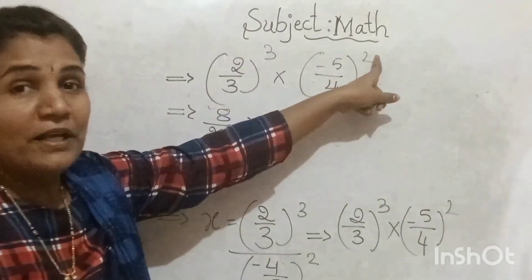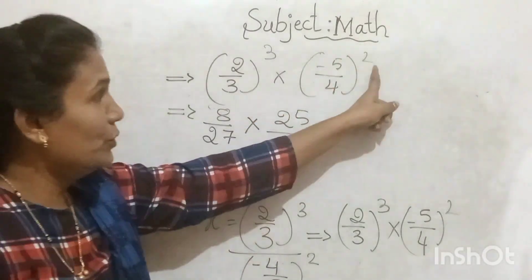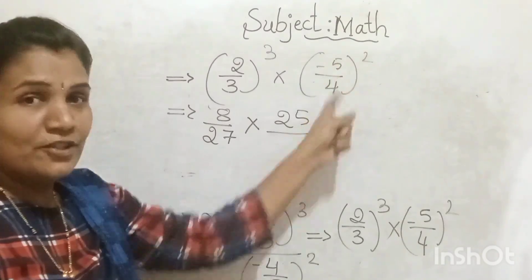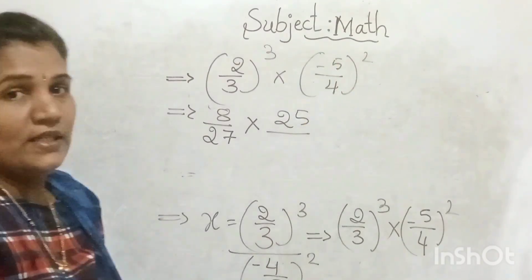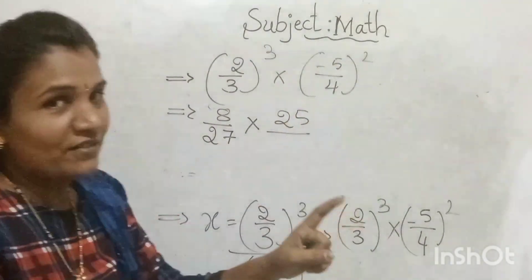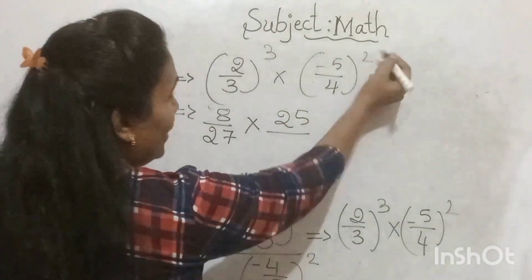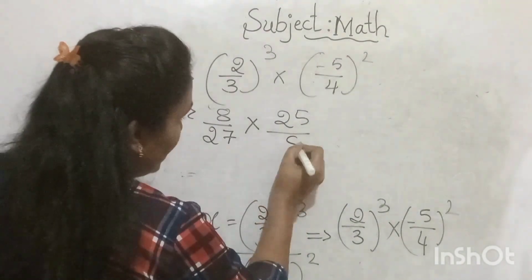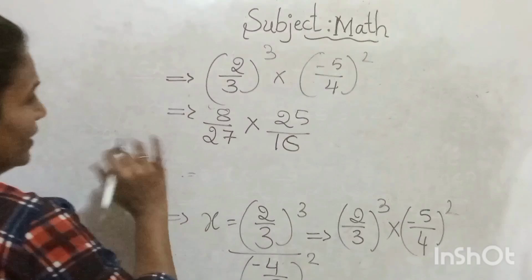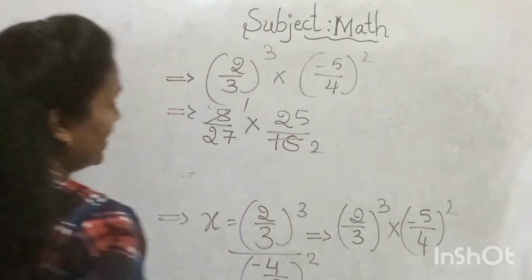The square is applicable for both numerator and denominator — for (-5) also and for 4 also. So (-5) × (-5) = +25, and 4 × 4 = 16. Also, 2³ = 8.